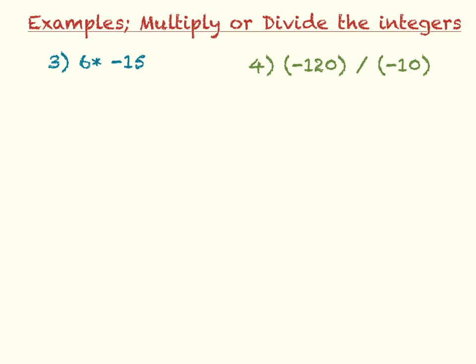Example 3, 6 times negative 15. So again, we're looking at our negative signs. There is 1, so that is an odd number of negative signs. So our answer is going to be negative 6 times 15.